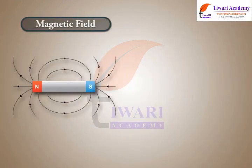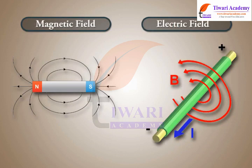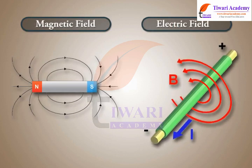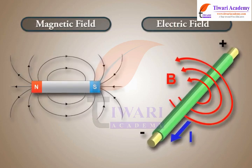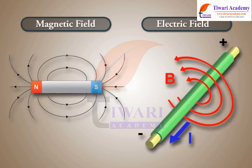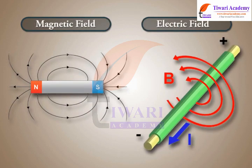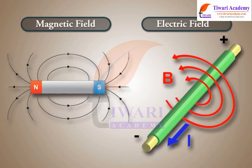Magnetic fields are different from electric fields. Although both types of fields are interconnected, they do different things.